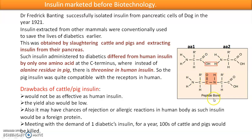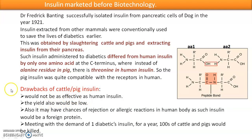In a long protein chain, one end carries the amino group and is called the N-terminus, while the other end is the C-terminus. Near the C-terminus, pig insulin and human insulin differed by just one amino acid — alanine in pig versus threonine in human. Because of this close similarity, pig insulin was quite compatible with human receptors and worked, though not as efficiently as human insulin.